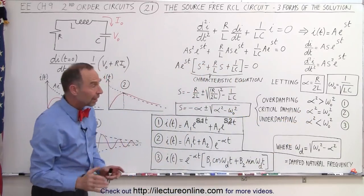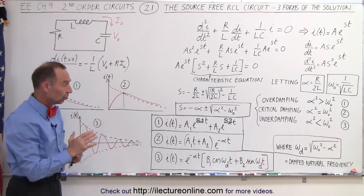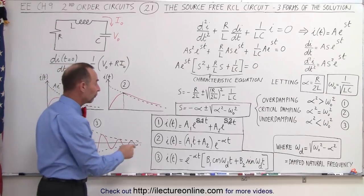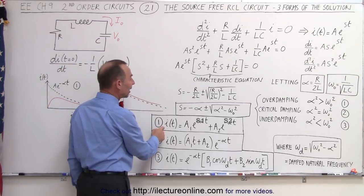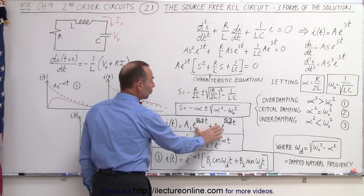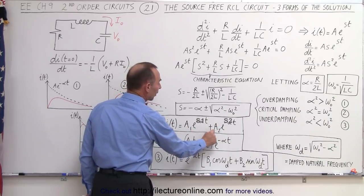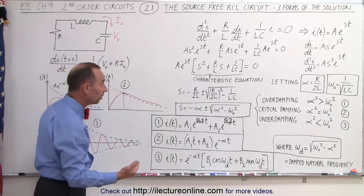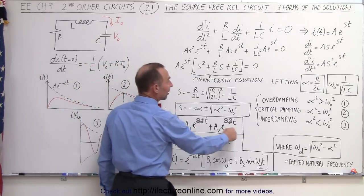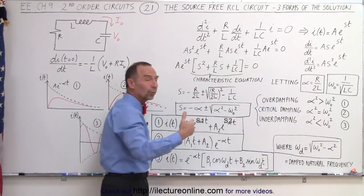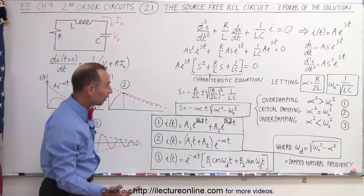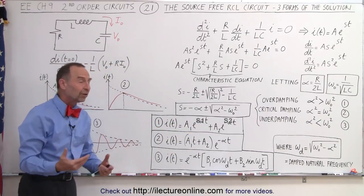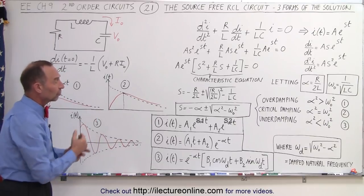Along with those conditions, we have three possible solutions. For the overdamping case, we have two exponential functions with two constants A1 and A2 in the front. Alpha is simply defined by R over 2L — we know the resistance and inductance, so we'll know alpha. Our job is then to find the values for A1 and A2 to complete the solution.